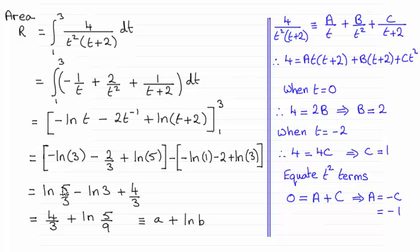And then across these two, I've got 5/3 divided by 3, which is going to be the natural log of 5/9. So 4/3 plus the natural log of 5/9 falls into this format.